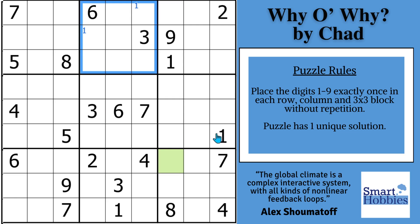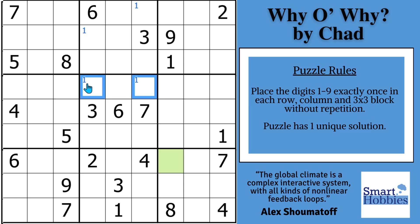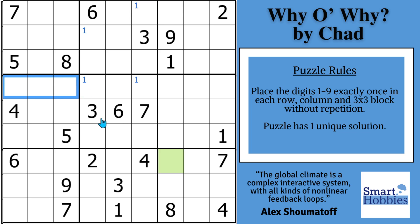Look here in block five — this one cuts across and this one comes up. Two possibilities for one right here, so this is called a pointing pair. The difference is since the ones are in the same row and they have to be somewhere in block five, it cannot be anywhere else along the row outside of that block. So these can't be ones, and there are only two possibilities for one in block four.